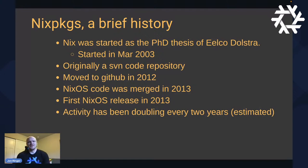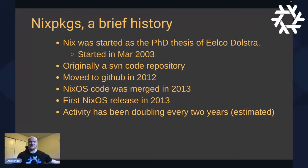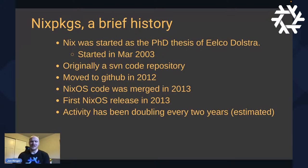Let's start with a brief history about Nix. Nix was started as a PhD thesis by Eelco Dolstra. This began in 2003 — originally it was an SVN code repository. Eventually it moved to Git, and then the community moved to GitHub in 2012. Nix used to be a separate code repository that lived outside of Nix packages, but in 2013 it was merged — that's now the Nix directory inside the repository. We also had the first release of Nix that year. From my own observations, roughly every two years activity on Nix packages has been about doubling, which is a huge growth rate.